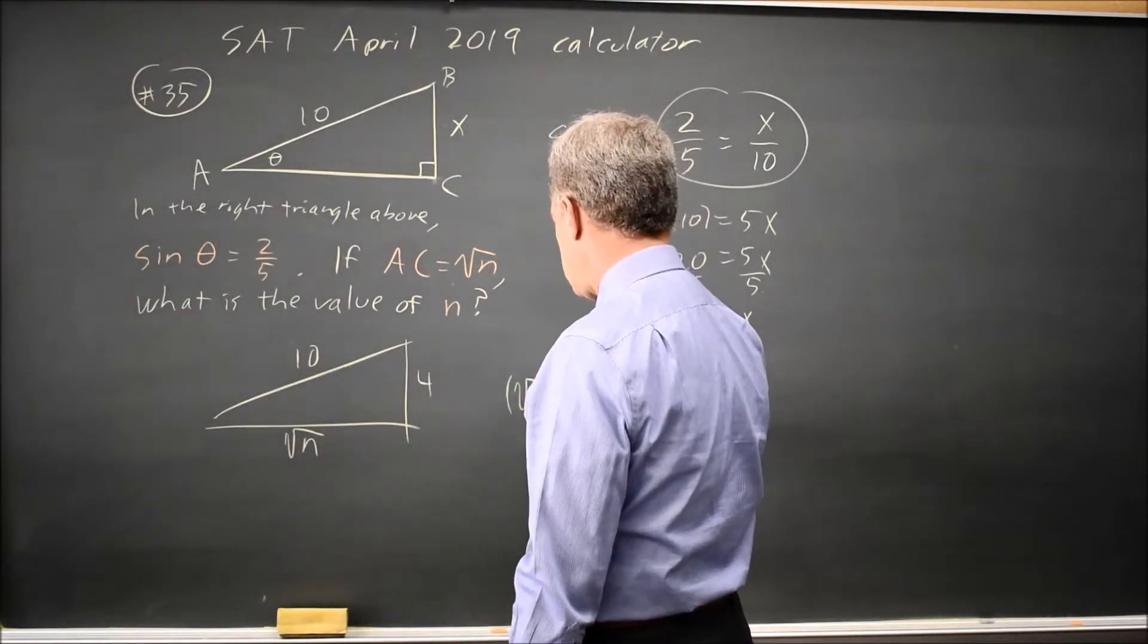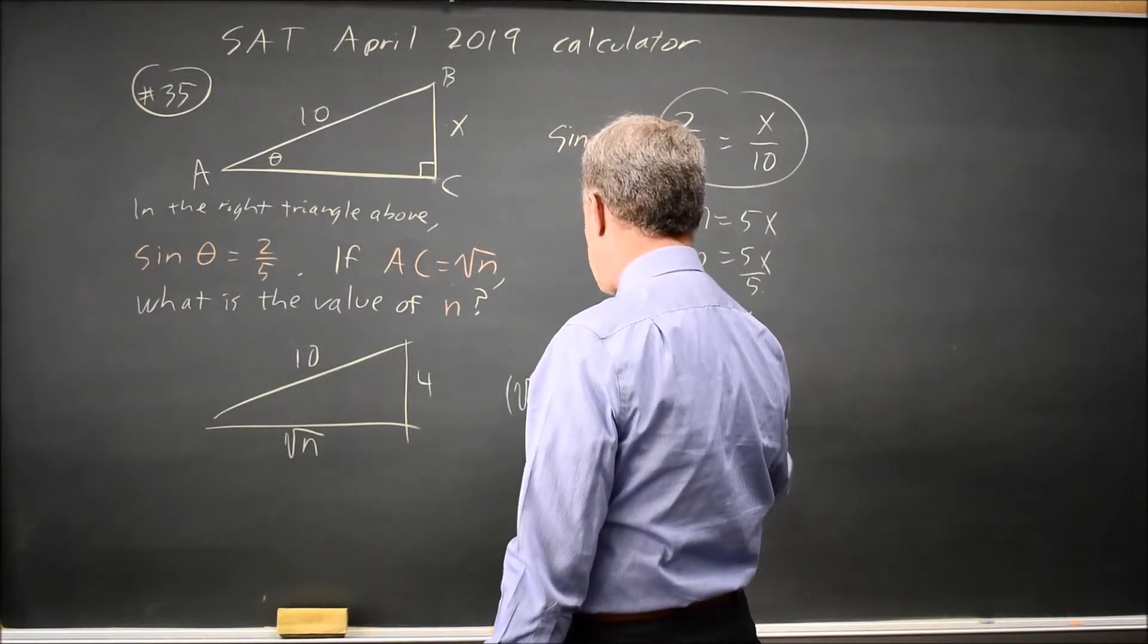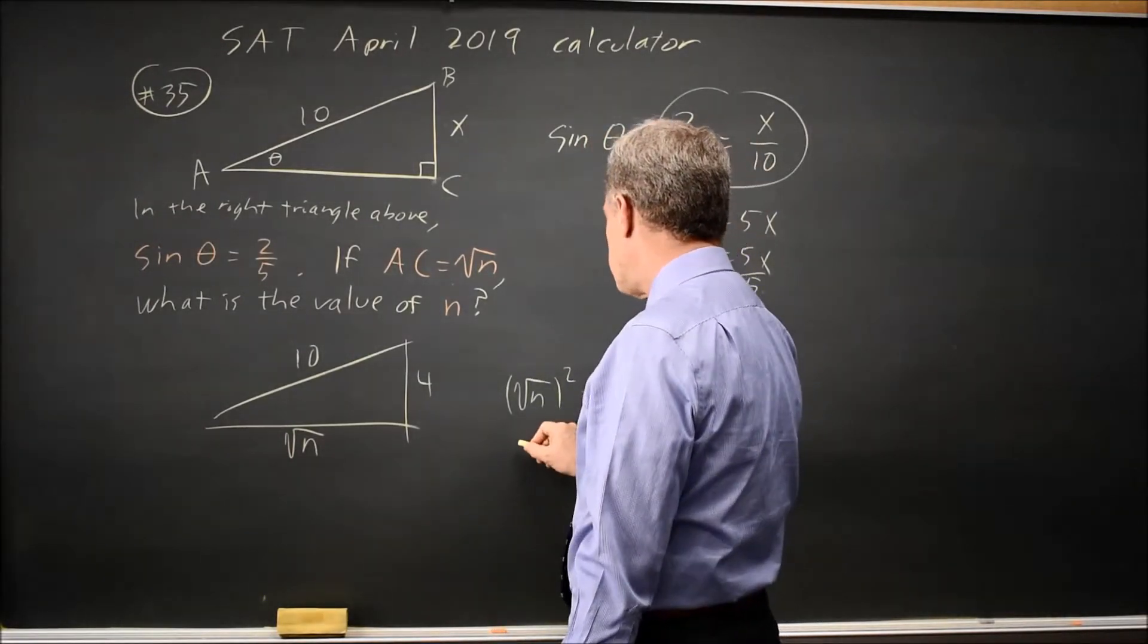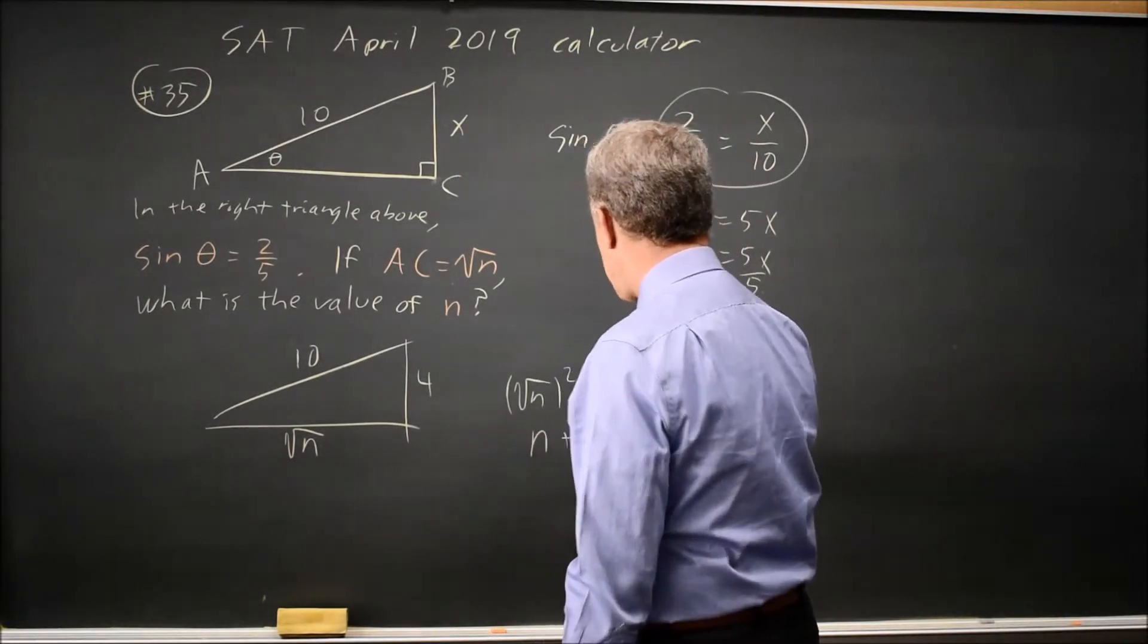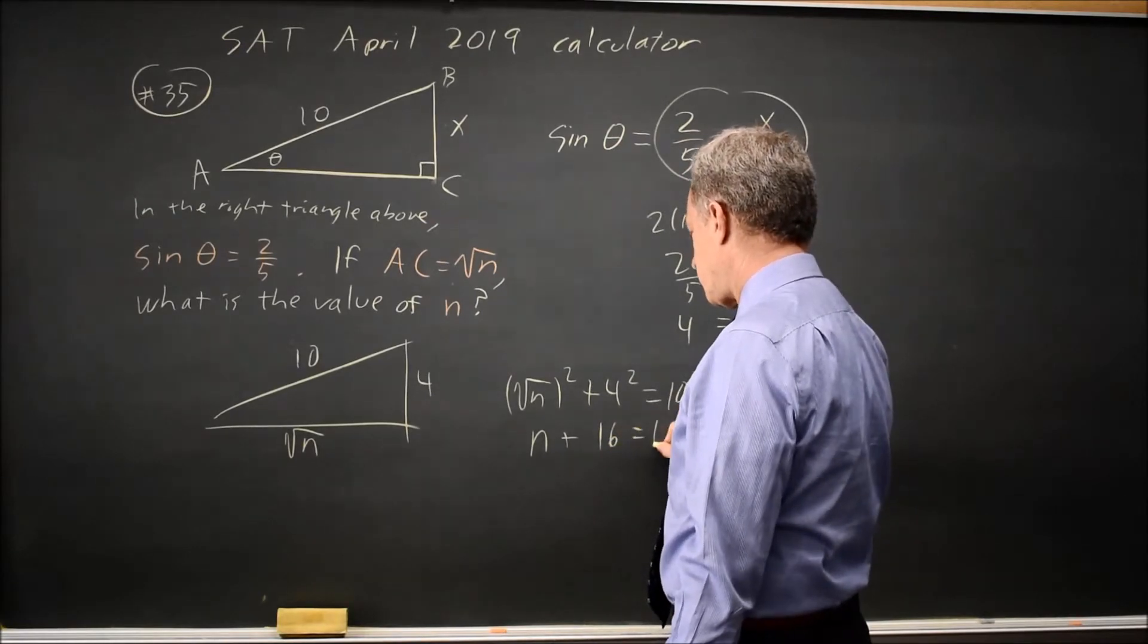Root n squared plus 4 squared equals 10 squared. So root n squared is n. 4 squared is 16. 10 squared is 100.